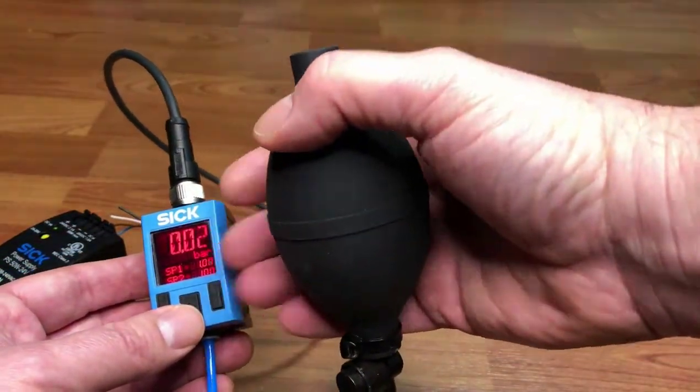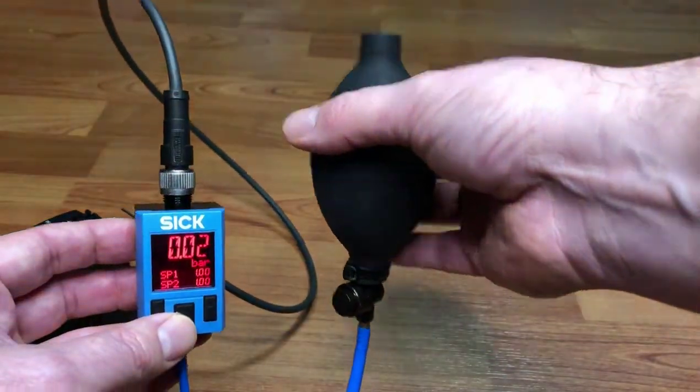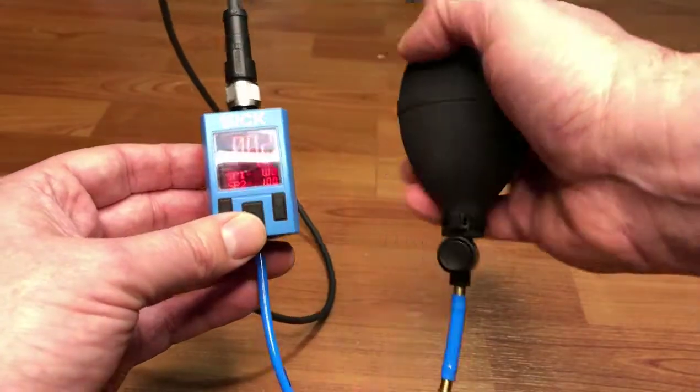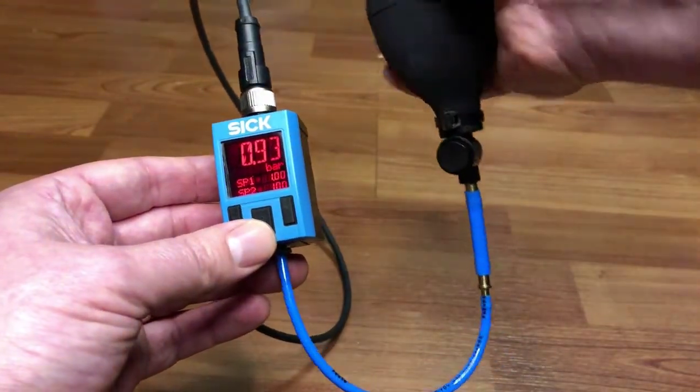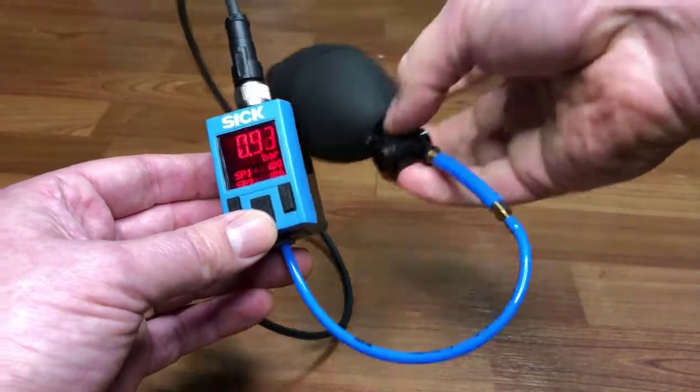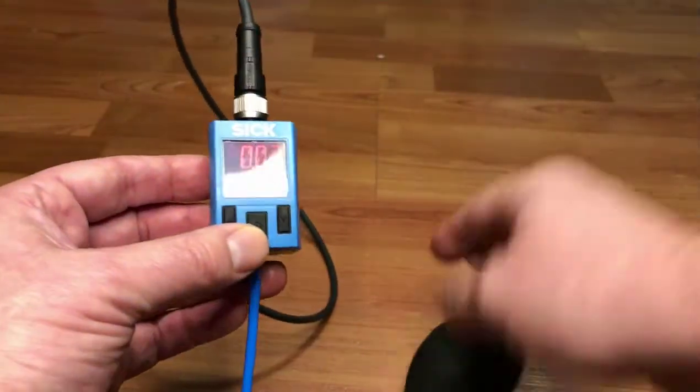What are the switch points? Let's check it out here and see what we can get to with the squeeze bulb. Right now it's set for one bar, so let's give it a good squeeze and see what kind of pressure ranges we can get to. I'm getting up to almost one bar, so we'd like to get a point where there's a switch point change.